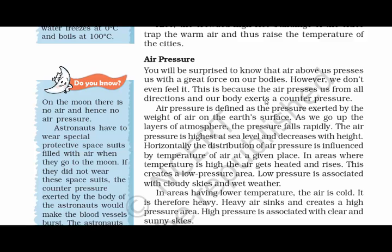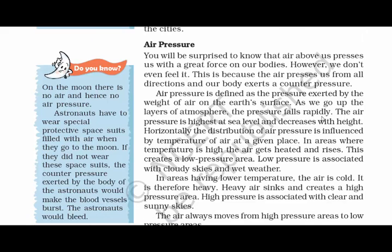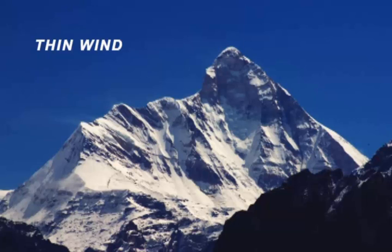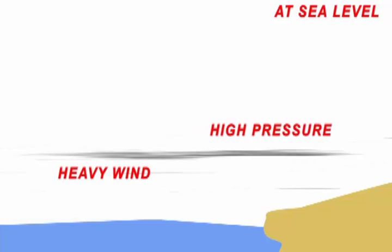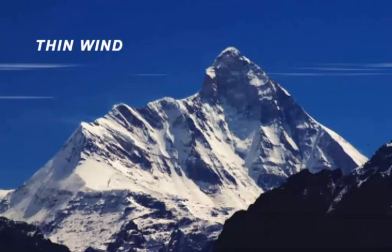Now let's move on to air pressure. The pressure exerted by the air above us on any body — like us or the entire Earth itself — is called air pressure. The air presses us from all directions and our body exerts a counter pressure. Air pressure is highest at sea level and decreases with height. The air gets thinner the higher you go. When you are in the mountains, there is less air around, but near sea level the pressure is high. The air creates huge pressure near sea level and gets thinner as you go up.